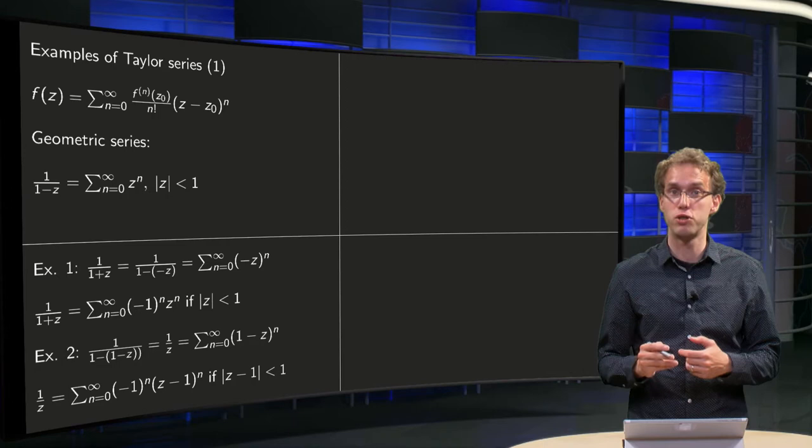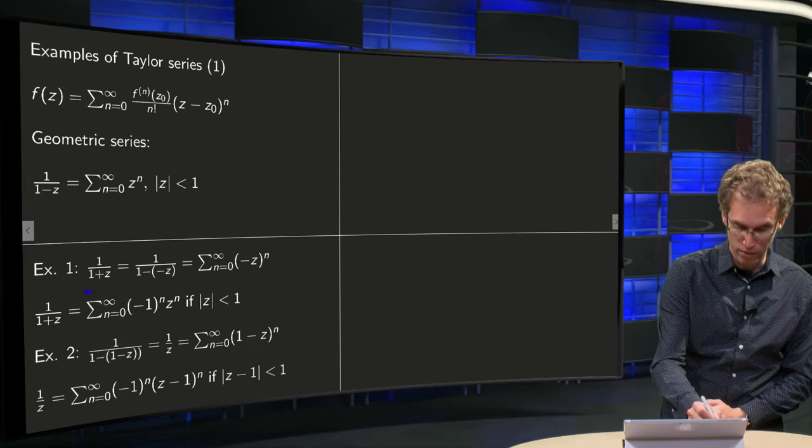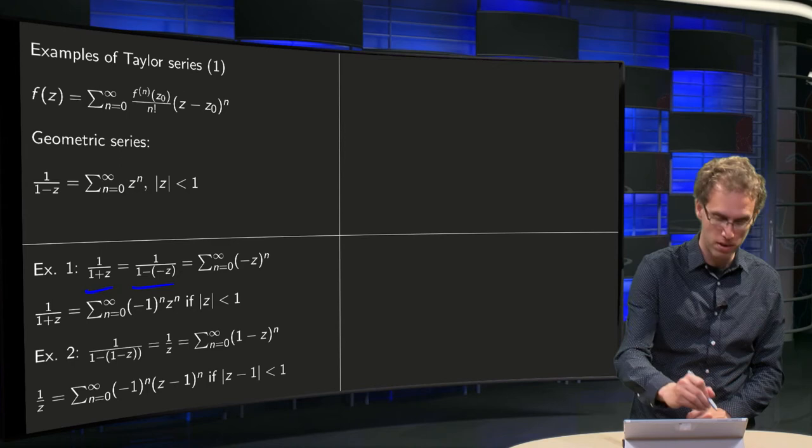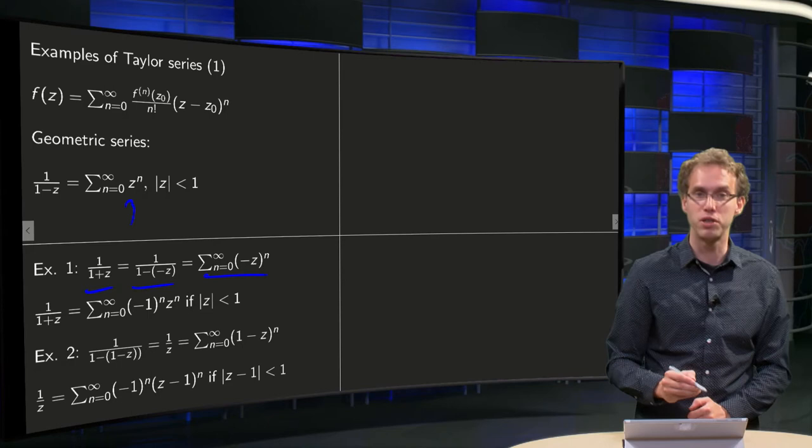For example, if we substitute -z on the spot of z, then we get 1/(1+z) equals 1/(1-(-z)). So we have to plug in -z in here in the geometric series. So sum n from 0 to infinity (-z)^n.